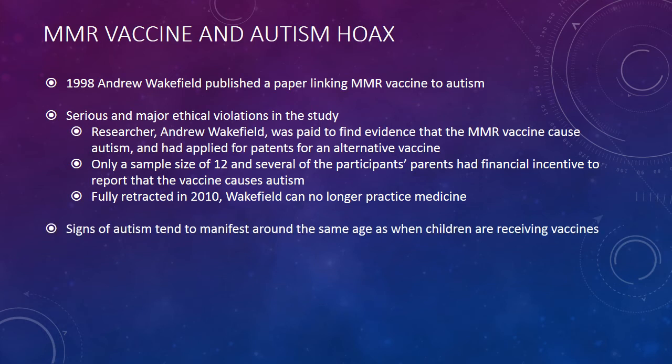The signs of autism tend to manifest around the same age as when children are receiving vaccines. We know that correlation does not equal causation. So even if your child receives a vaccine and then later develops signs of autism, that doesn't mean the vaccine caused autism — because age is a confound. Age determines both when your child should be getting a vaccine and when signs of autism might manifest, and you cannot make a causal claim with just correlational data.